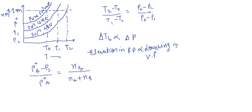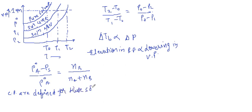Colligative properties are defined for dilute solutions only. We know that in the case of a dilute solution, the moles of solvent Na is very much greater than the moles of solute Nb. So in that case Na plus Nb is approximately equal to Na. Therefore delta P divided by P0 equals Nb divided by Na.